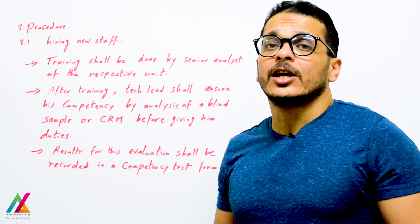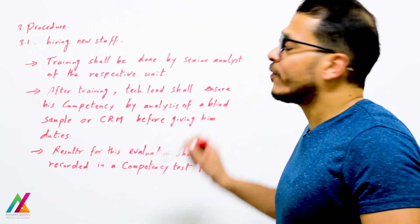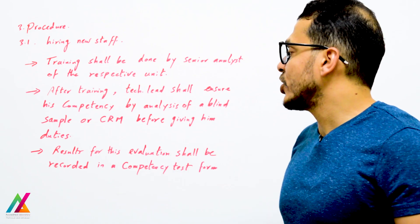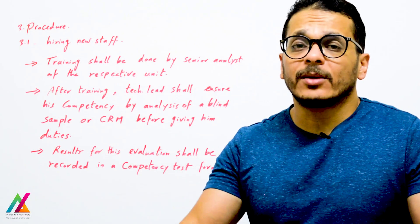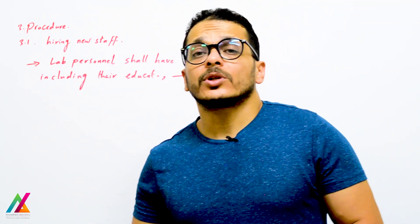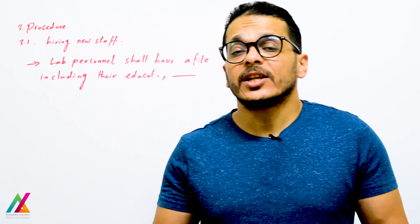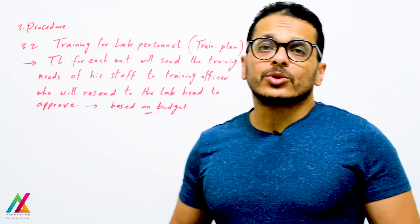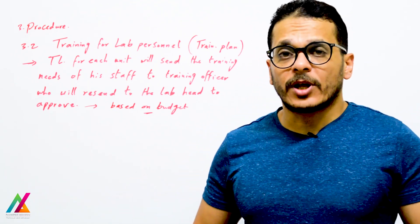After training, competency shall be technically evaluated by giving the analyst a blind sample with unknown concentrations of target analytes, or a certified reference material containing the target analytes — before assigning any duties. Results of this evaluation shall be recorded in a competency test form. To receive duties, results must be within the acceptable range. Every person inside the lab shall also have a personal file including education certificates, training certificates, and any other relevant certificates.